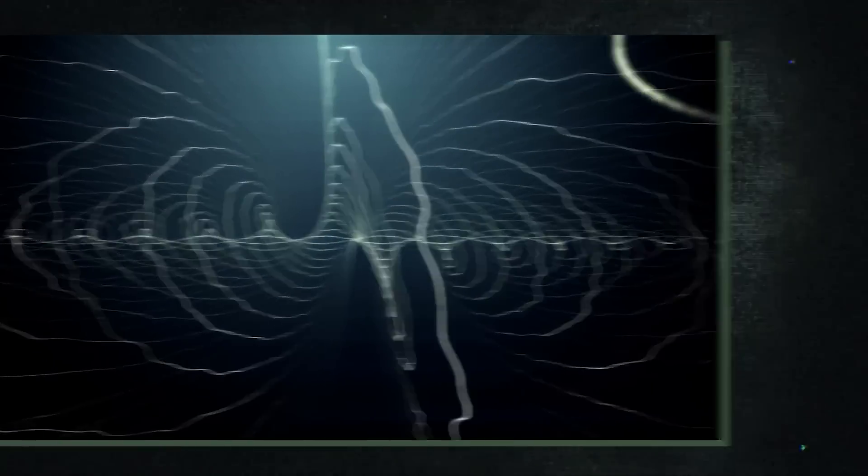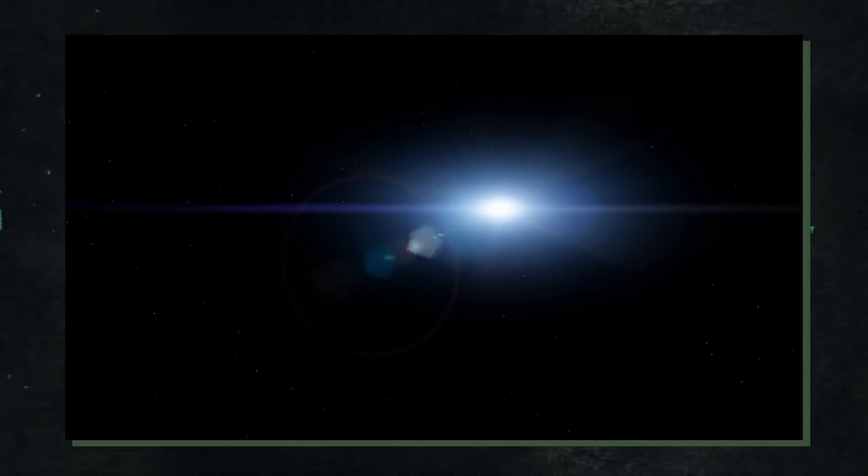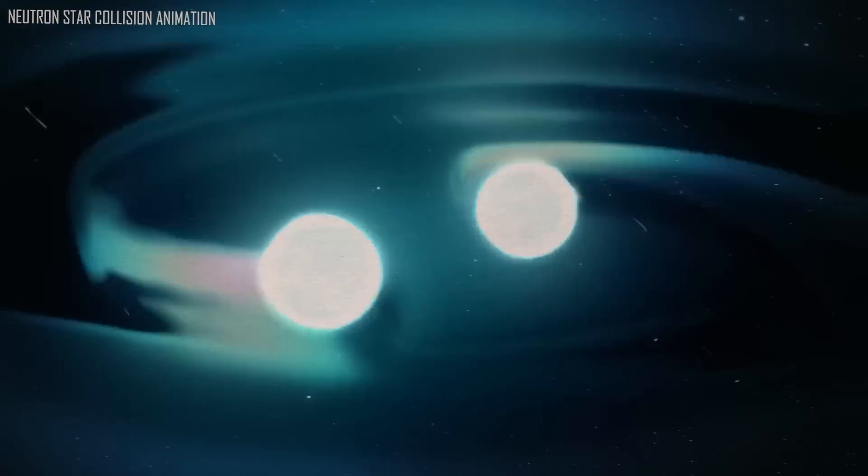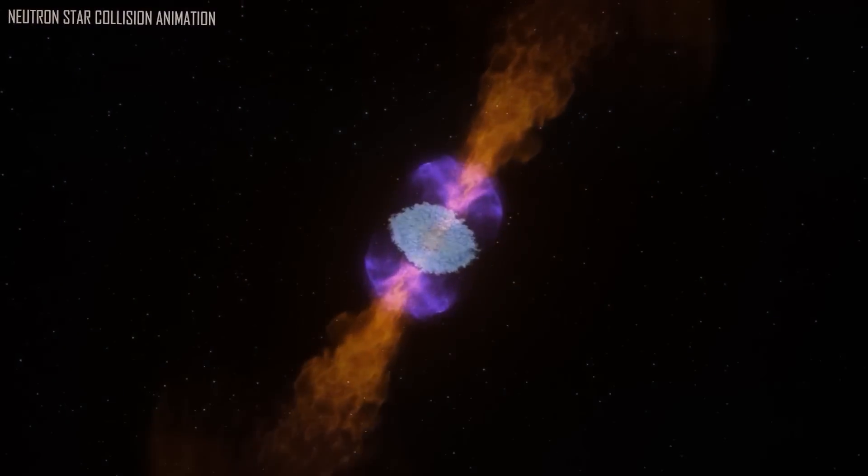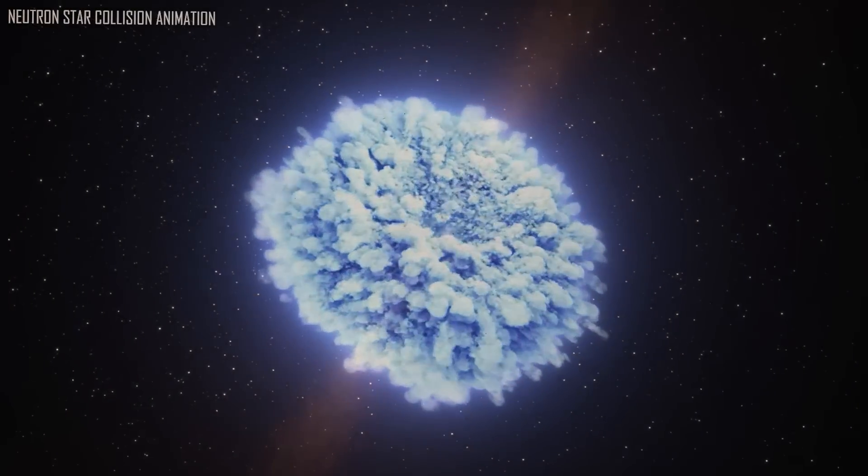While magnetars are not thought to be present in globular clusters, other types of stellar remnants ought to be common. Early in the lives of these old clusters, white dwarves, which are formed when sun-like stars balloon into red giants and die, and neutron stars, which are formed by greater supernovae, can be produced. It's possible that magnetars can form when two neutron stars crash and merge, when two white dwarves collide and merge, or when an orbiting companion star of a white dwarf steals enough material for it to collapse into a newborn neutron star.